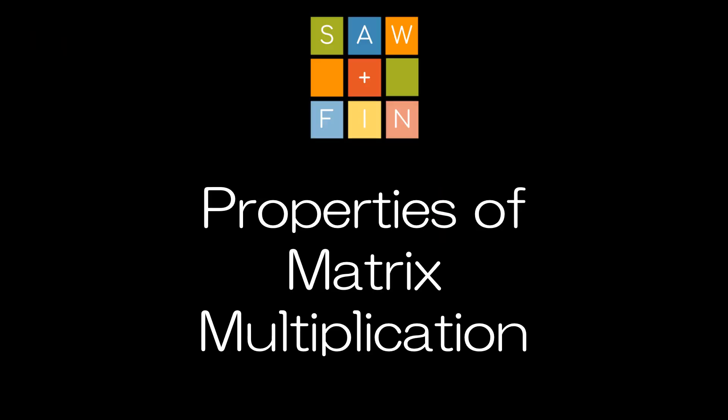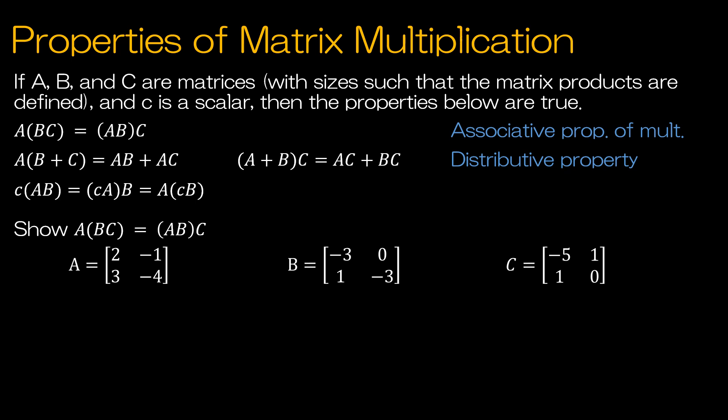Let's now talk about the properties of matrix multiplication. So A, B, and C are all matrices. We're saying A times B times C can be grouped differently, but notice the order remains the same. You can choose to multiply B times C first and then times A, or A times B first and then times C, and your solution will be the same.